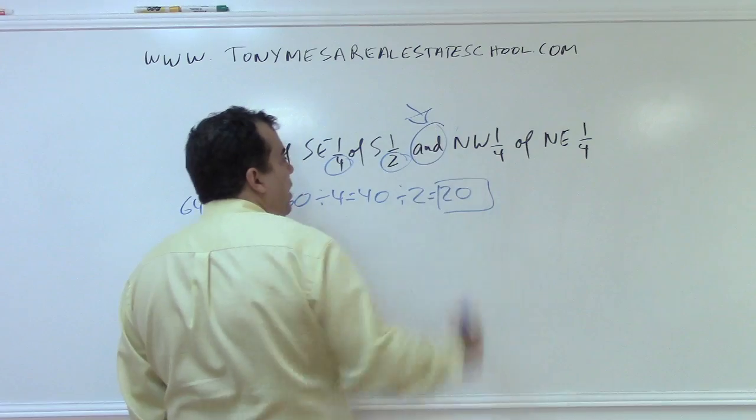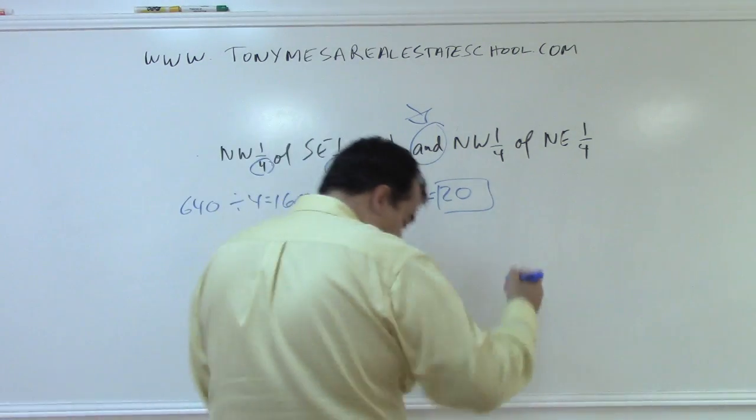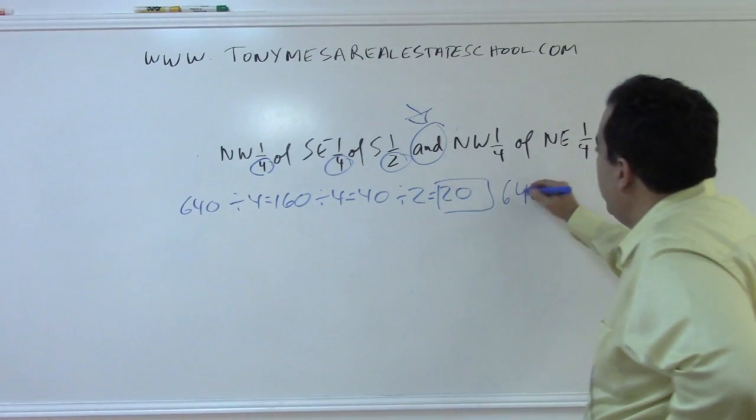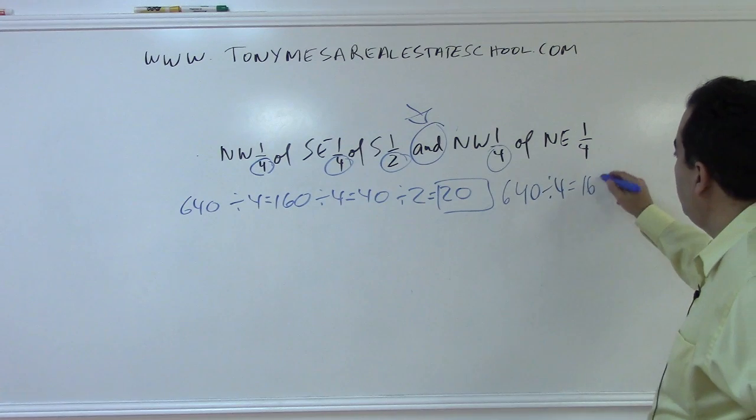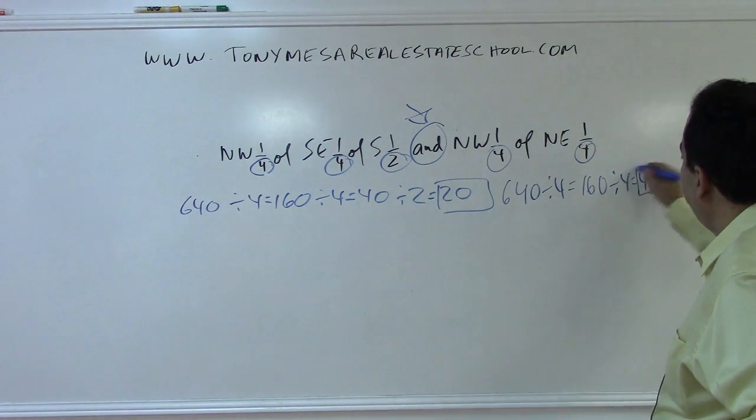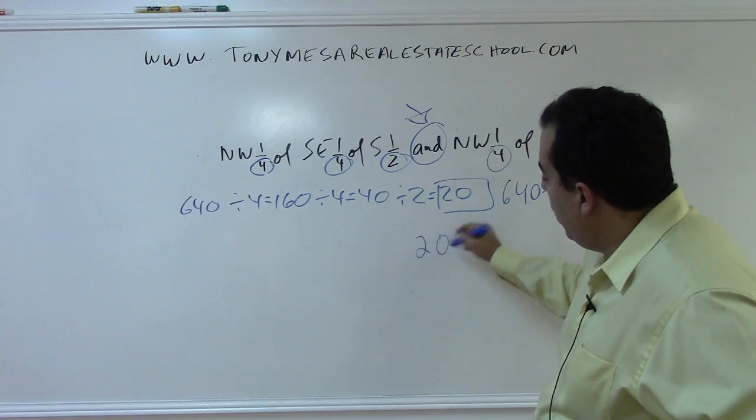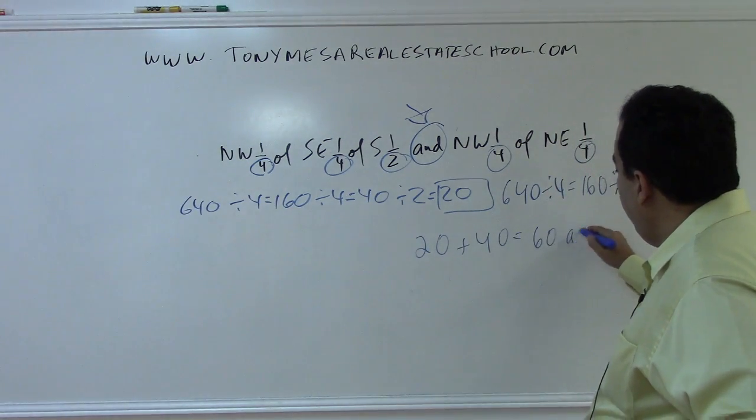And means a separate parcel of land. So then I start again with 640, divided by 4 is 160, divided by 4 is 40. And then I add together 20 plus 40, and that is 60 acres.